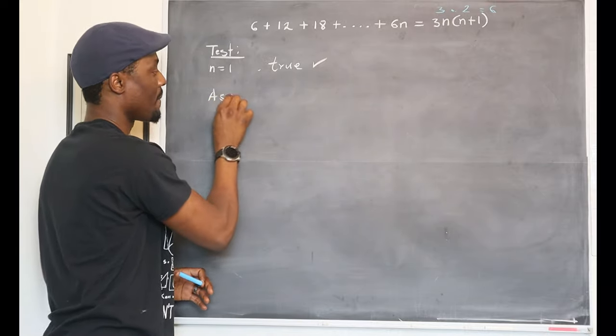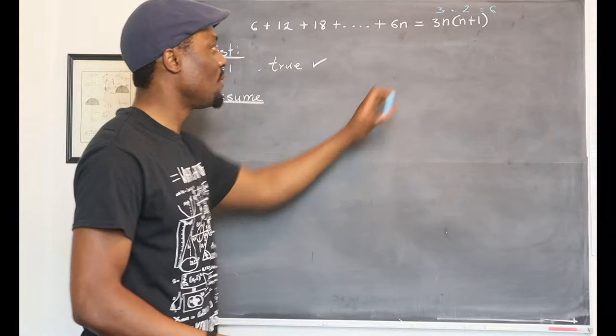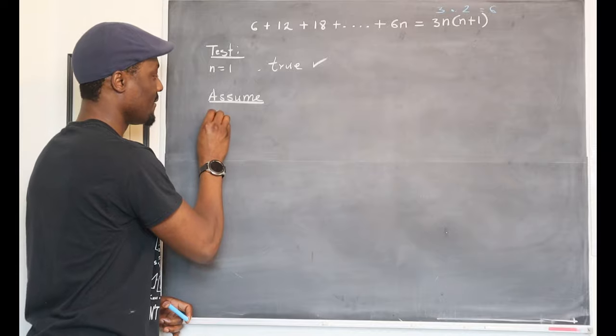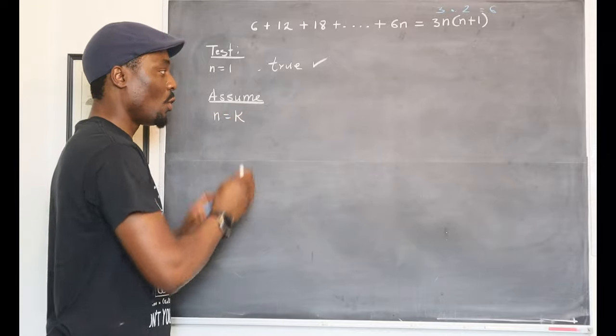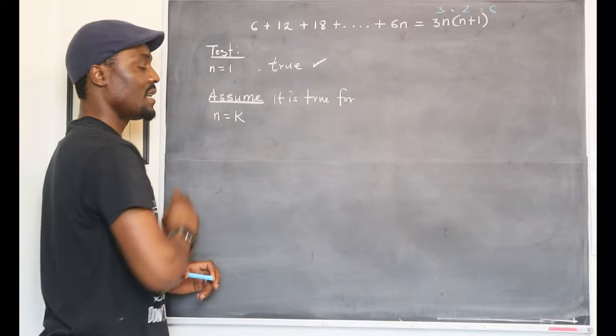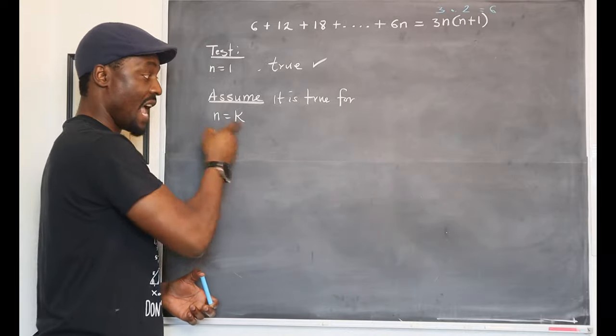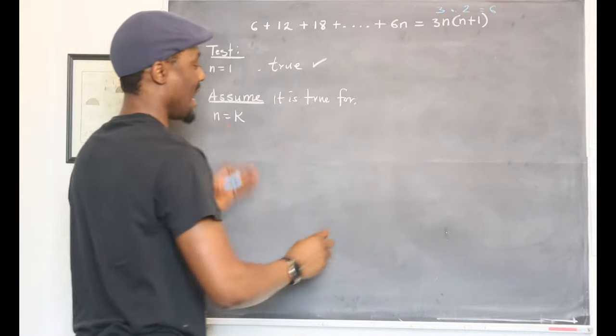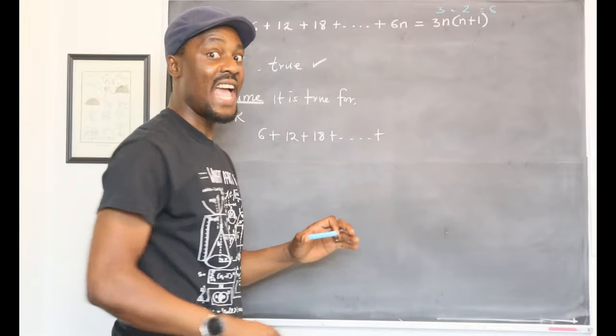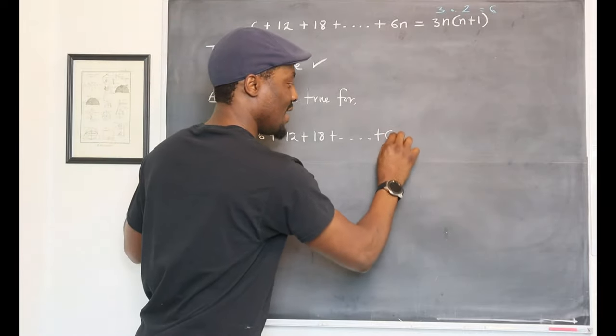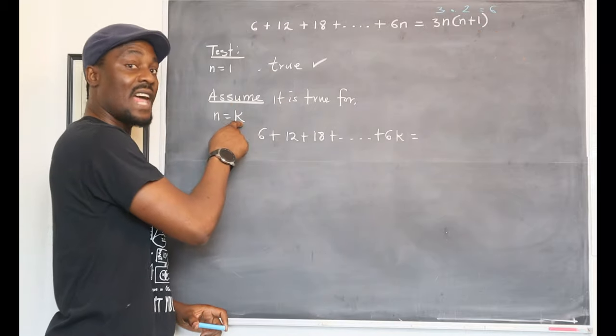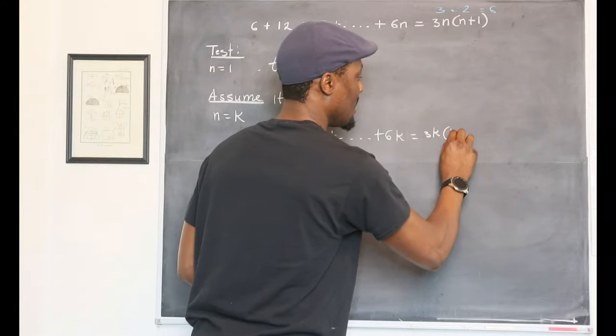The next thing is to assume. What are you going to assume? You're going to assume this n. We don't know what the n is, so we're going to say it's k, a positive integer. So we're going to say n equals k. We're going to assume that it is true. So your assumption is that assume it is true for n equals k. If it is true for n equals k, you can easily write this out and say that 6 plus 12 plus 18 plus, when you get here, you're not going to write 6n. We've said n equals k. You're going to write 6k equals, and in this formula, you're going to replace the n's with k. So you're going to write 3k into k plus 1.